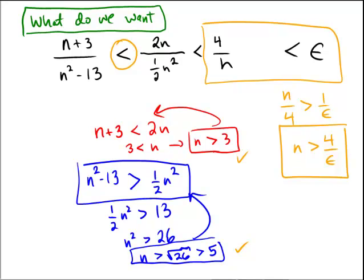So we need the red condition to hold and the blue condition to hold so that we can say that this expression, this inequality, is true. And if that inequality is true, then we can choose our N to be larger than 4 over epsilon to ensure that this inequality holds.